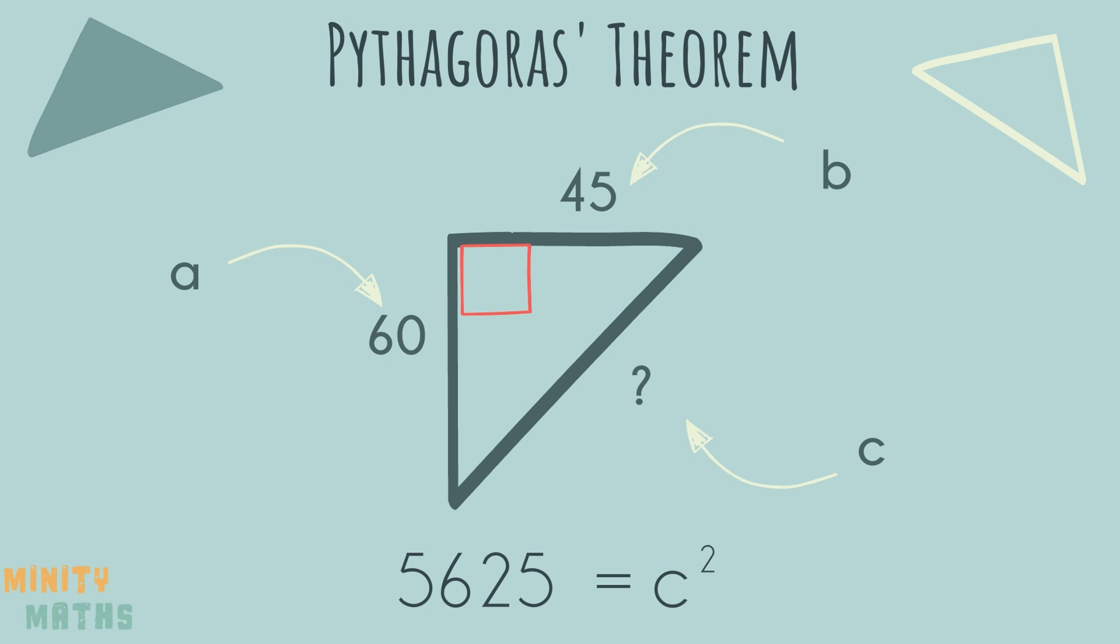To find out what the actual length of c is, we need to find out the square root of 5625. Finding the square root is an important step, as many learners sometimes forget that they have only calculated the square of the side, not the length of the side itself.